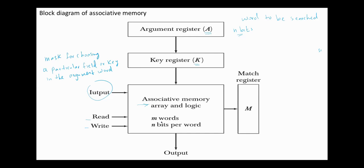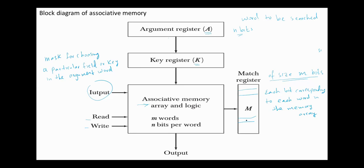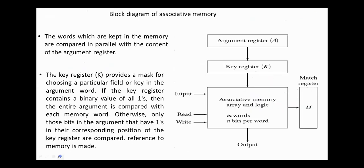The associative memory array contains the words which are to be compared with the argument word. The match register is of size n bits, each bit corresponding to each word in the memory array. After the matching process, the bits corresponding to matching words in the match register are set to one, and if there is no match, they are cleared to zero. The words in memory are compared in parallel with the content of the argument register, which is why associative memory is preferred in applications that require very high speeds for searching.